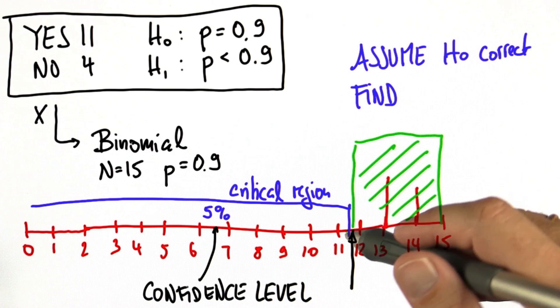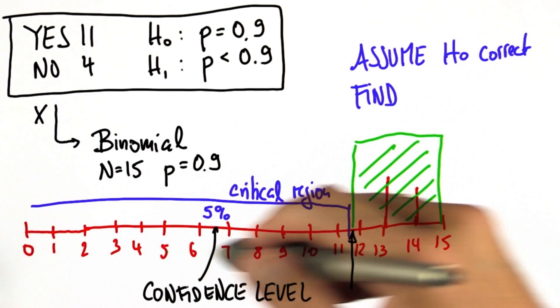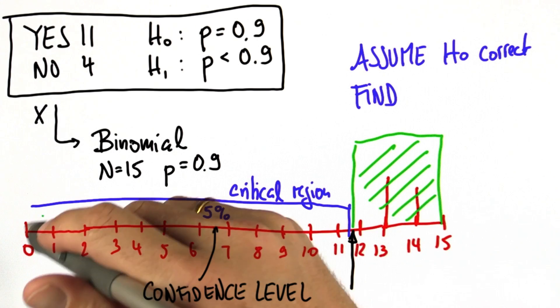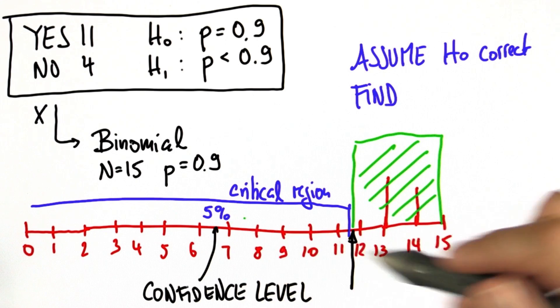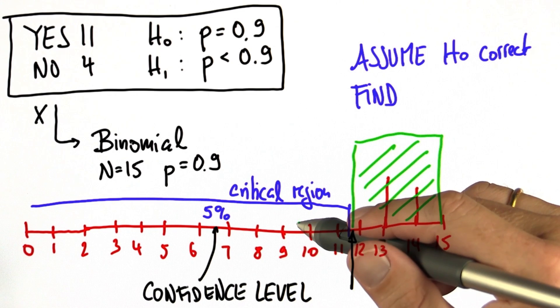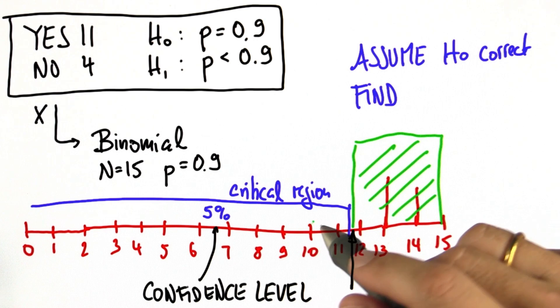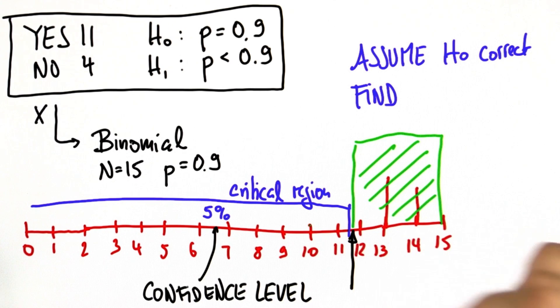And again, the logic is the critical region collects many possible outcomes, but in totality these probabilities don't exceed the 5%. So, if the final outcome is in the critical region, you can confidently say, wow, I'm really surprised I don't buy that H0 is correct.